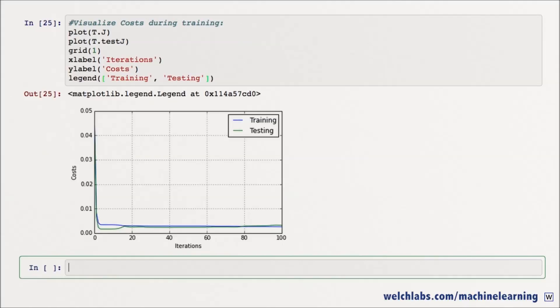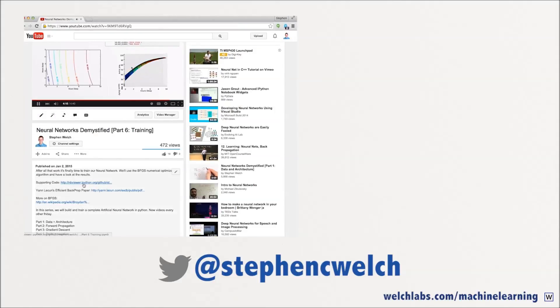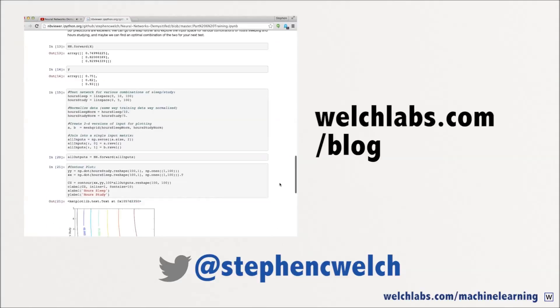And that's it! We've trained and evaluated an artificial neural network to predict your score on a test based on how many hours you slept and studied the night before. I've really enjoyed making these videos, and I wanted to say a big thank you to everyone who's watched and commented. I want to point out that supporting IPython notebooks are linked below and available at welchlabs.com/blog. To be kept up to date on future videos, you can subscribe below and follow me on Twitter. Thanks!